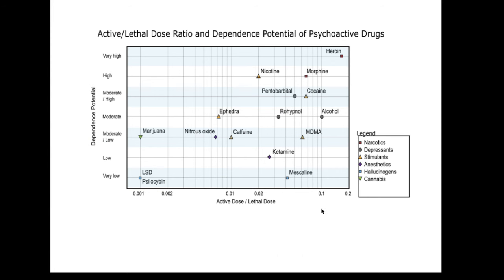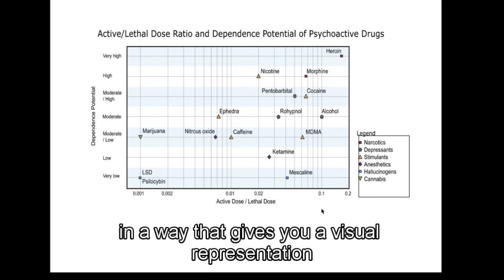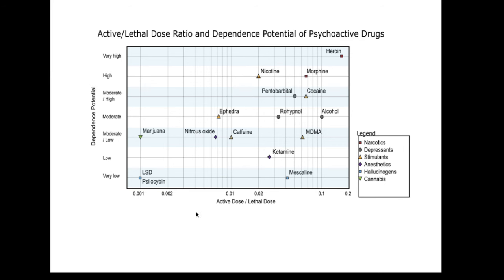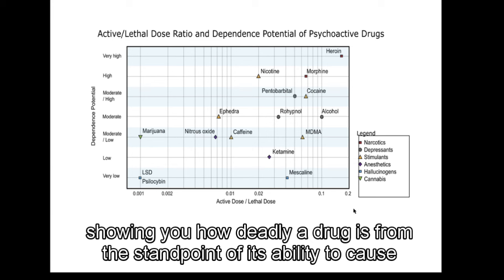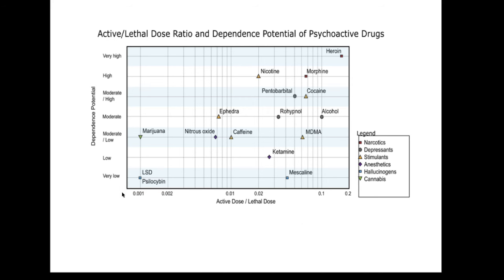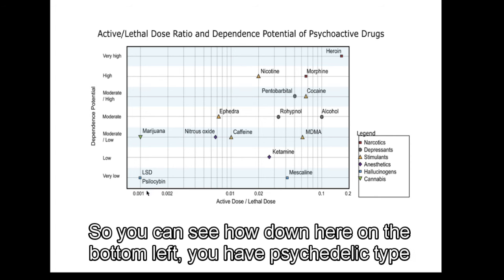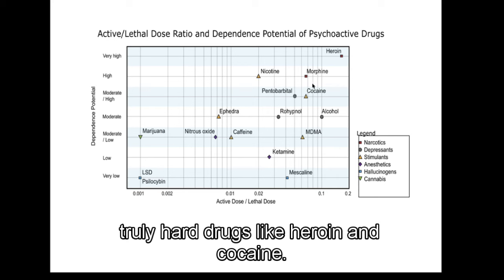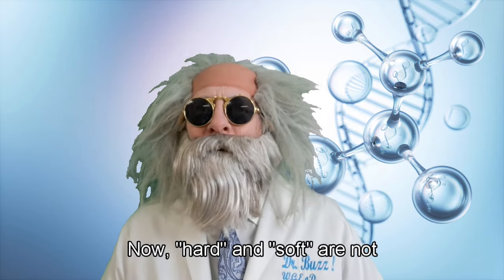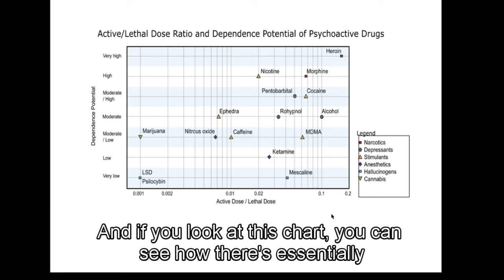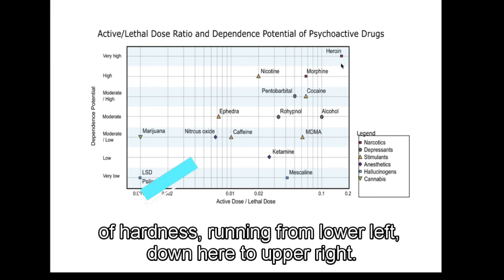As you can see here, we have a number of different drugs which have been plotted on this chart in a way that gives you a visual representation of how dangerous they really are. The right and left axis shows you how deadly a drug is from the standpoint of its ability to cause overdose death, while the up and down axis shows you how addictive the drug is. So you can see how down here on the bottom left you have psychedelic type drugs, and up here on the top right you have truly hard drugs like heroin and cocaine. Now, hard and soft are not scientific terms used in medicine in relation to drugs. However, the concept is useful, and if you look at this chart you can see there's essentially what I would call an axis of hardness running from lower left to upper right.